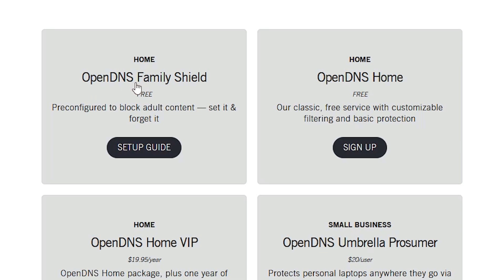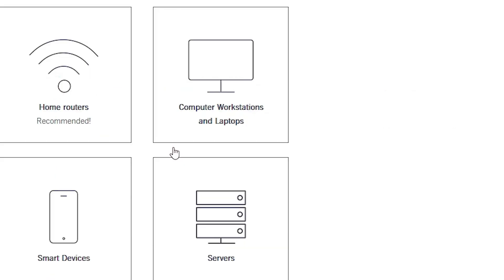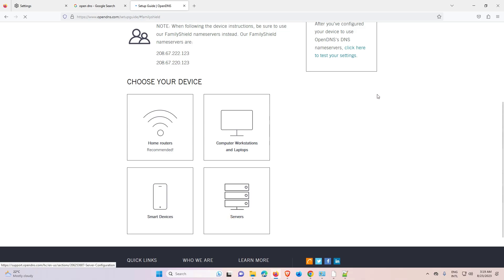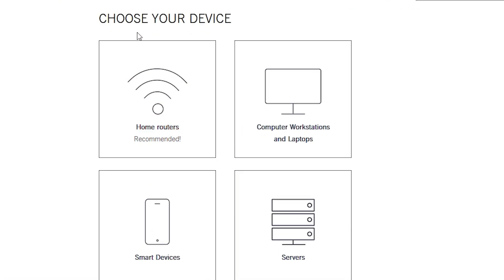Scroll down and we find many options. We are using Family Shield, so click on OpenDNS Family Shield. In the setup guides, choose your device. I am using a PC so I click on Computer, Workstation and Laptop.